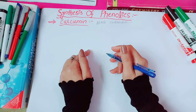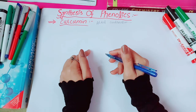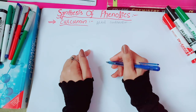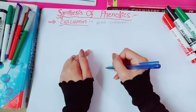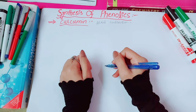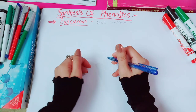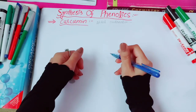Curcumin is the active ingredient of turmeric. Turmeric has many health benefits — it contains bioactive compounds with powerful medicinal properties, including antioxidant properties and anti-inflammatory activities. So let's get started with its synthesis.